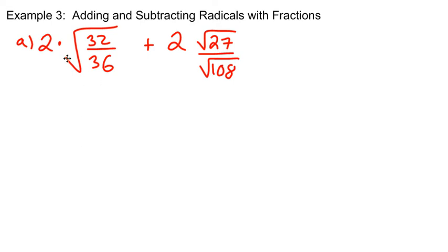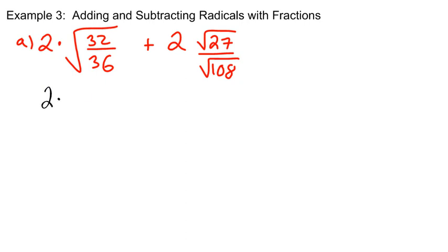Let's try to simplify — that's always our goal. We want to simplify our radicals and see what we can do from there. When I have one big radical fraction, I can break that up into two separate radicals. I'm going to rewrite this as two times radical 32 over radical 36. If I have a radical on top and a radical on the bottom, I can also rewrite that as one big radical.